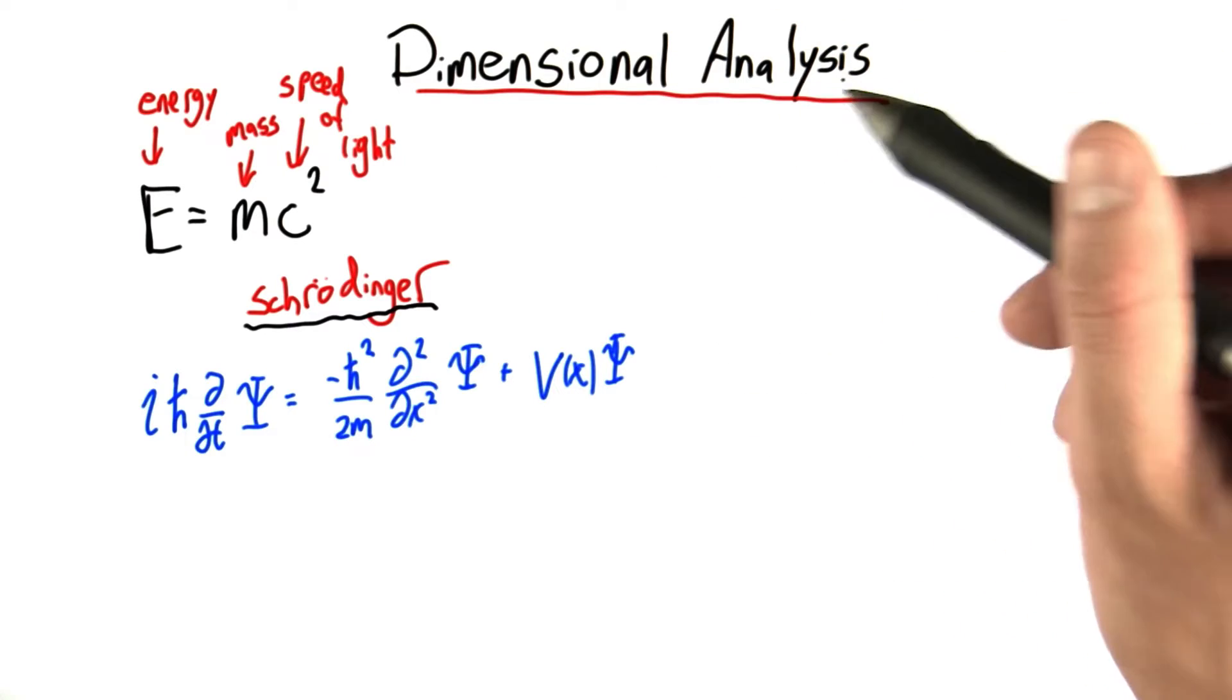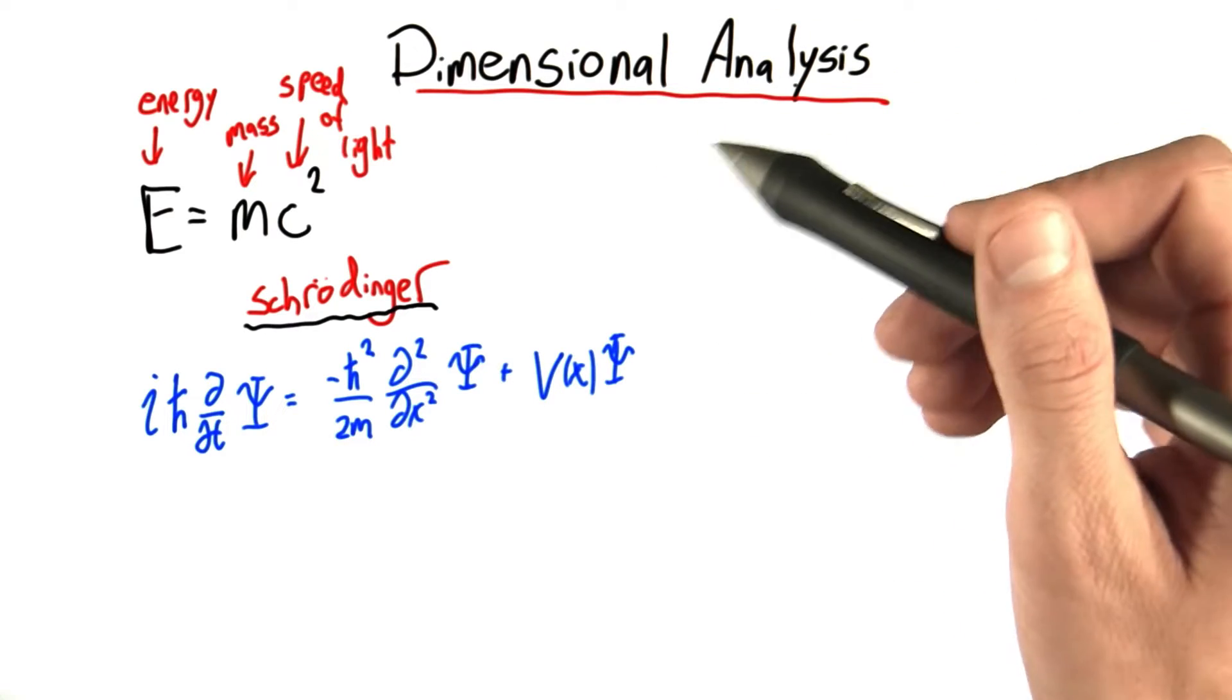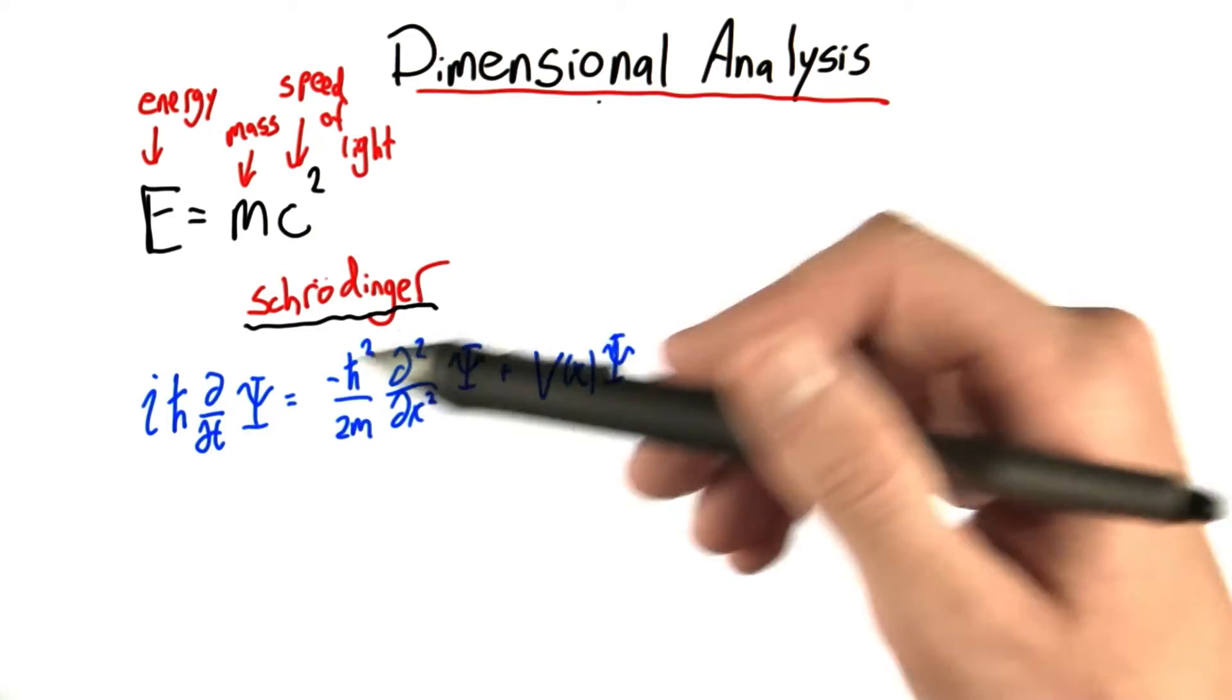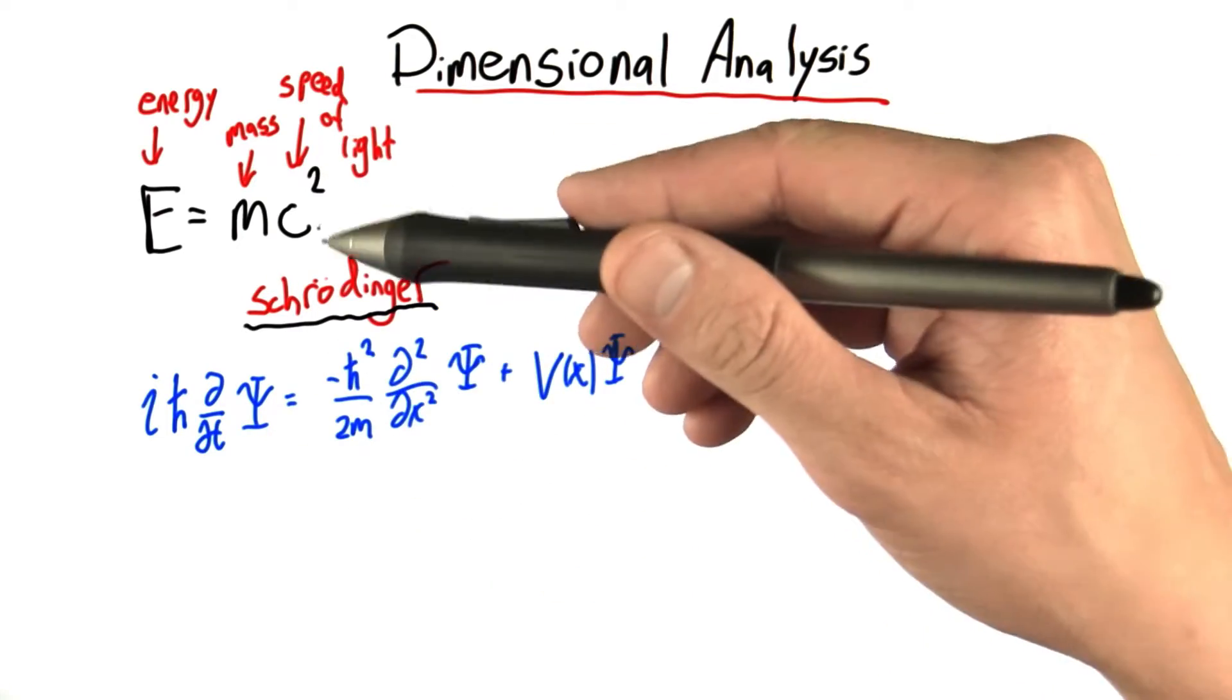In this question, you're going to use dimensional analysis, which is a tool we mentioned briefly in the unit, to do some basic analysis of two fairly advanced physics equations.